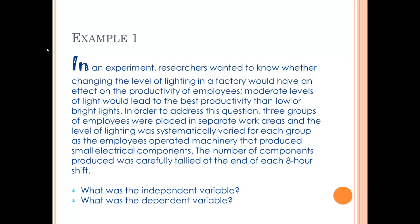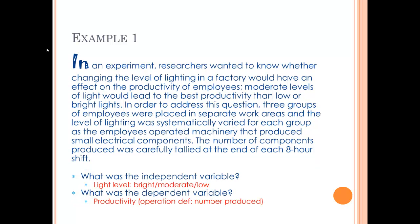Let's first look at an example. Example number one: in an experiment, researchers are interested in light level on productivity. We have three separate work areas — low, medium, and high light. We measure the output over eight hours, and that will be the productivity. Hopefully you're able to identify light level as the independent variable and productivity as the dependent variable. The levels of the IV are bright, moderate, and low, and I've also indicated the operational definition of the dependent variable.